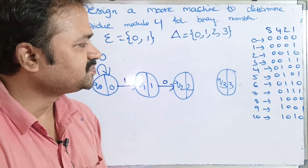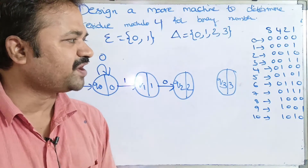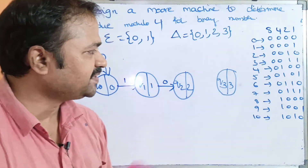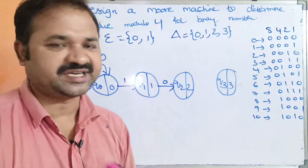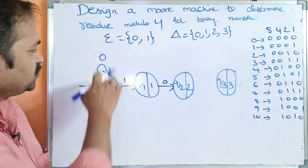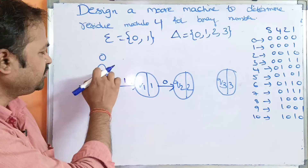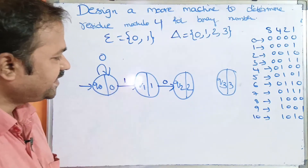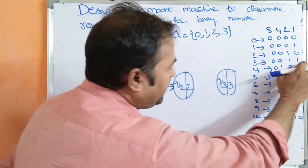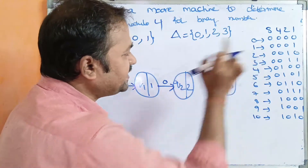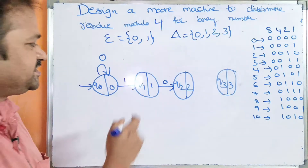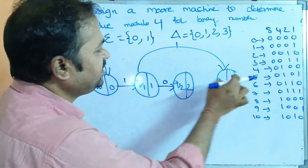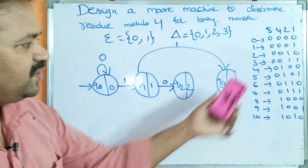Consider 3, which is 0011 in binary. 3 modulo 4 is 3, so we need to be at Q3. Applying 0, 0 keeps us at Q0. Applying 1 on Q0 takes us to Q1. Then applying 1 on Q1 takes us to Q3. Output of Q3 is 3.